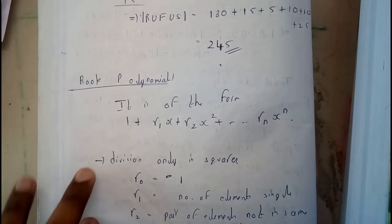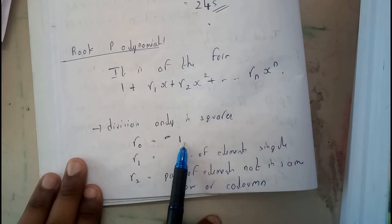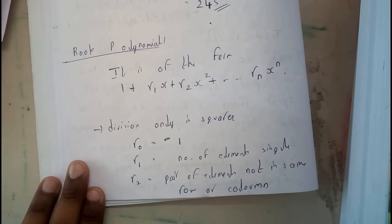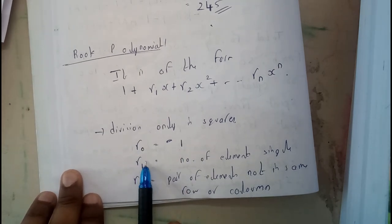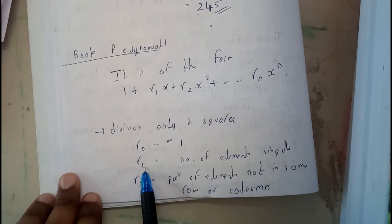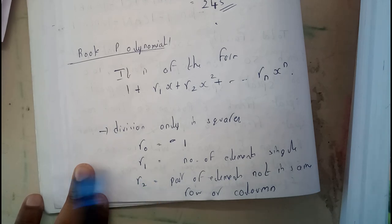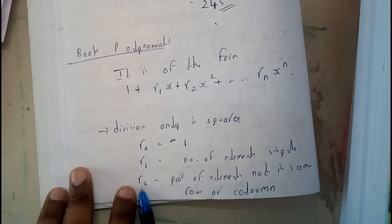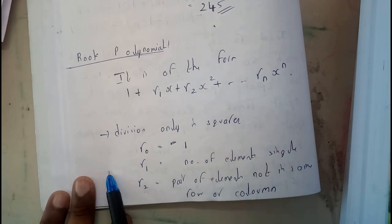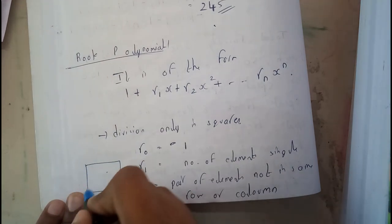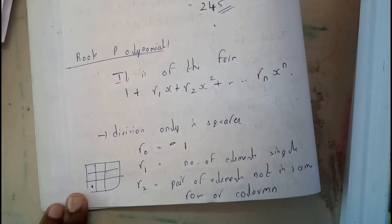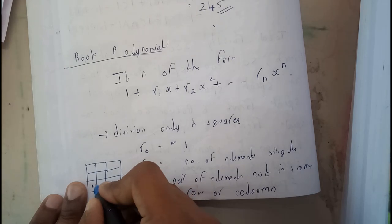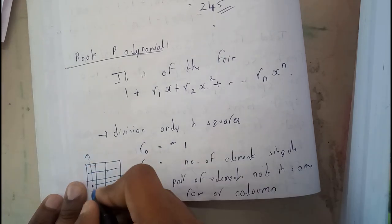r0 is always fixed at 1. r1 indicates the number of individual elements — we select one element at a time, so r1 equals the number of available elements. r2 is the count of pairs of elements such that neither element shares the same row or the same column as the other.